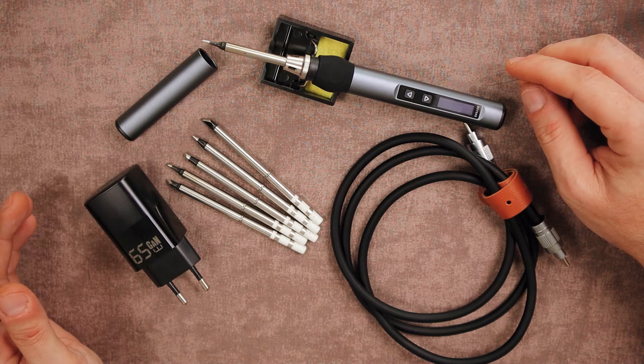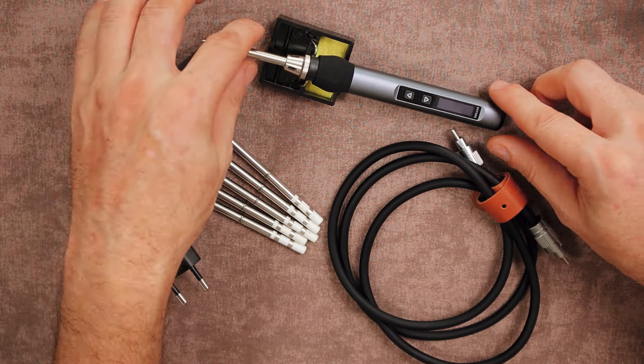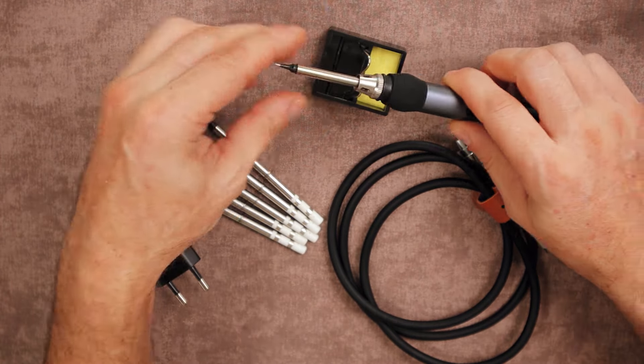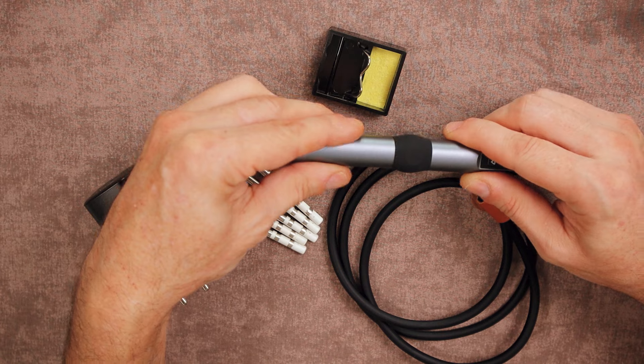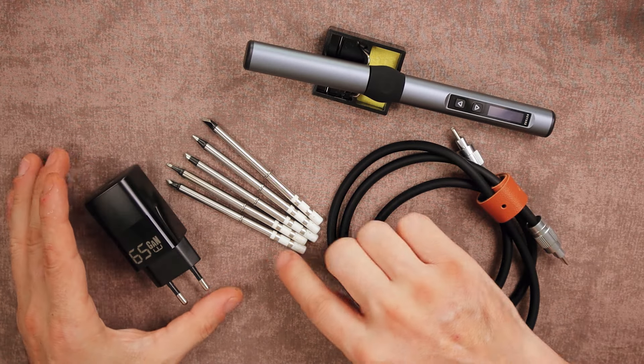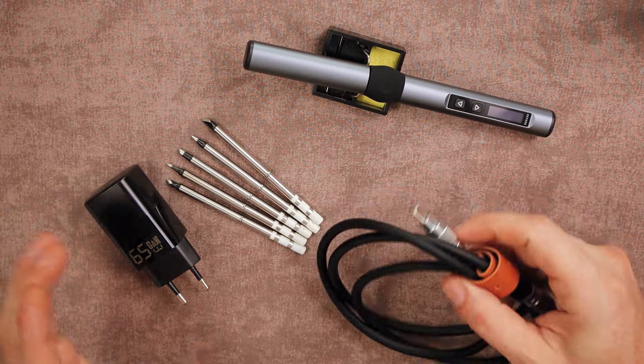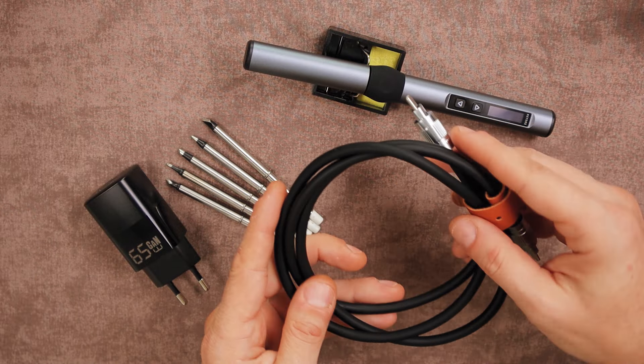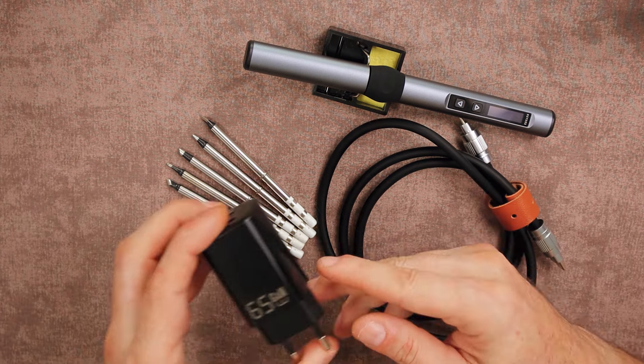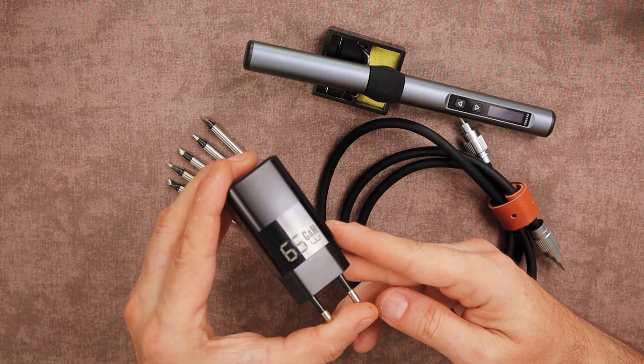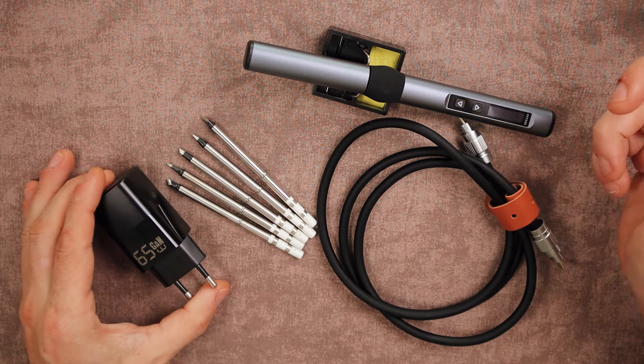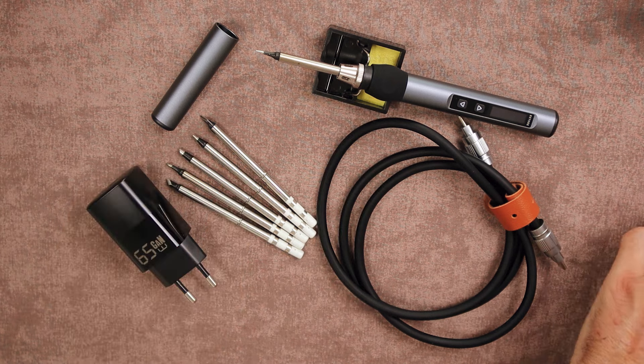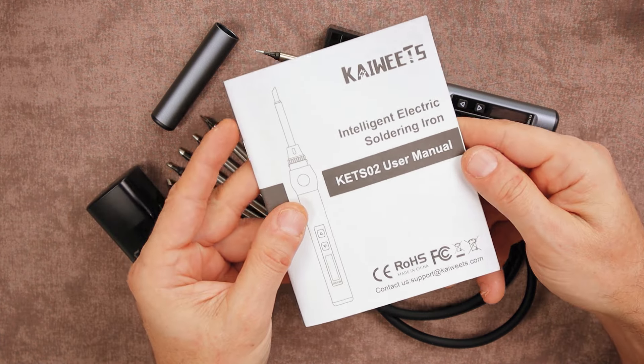Okay, so here we have the entire package one more time. We have the soldering iron, the holder with the sponge, and of course the nice cover for the soldering iron. We have the extra tips that you can order, a very well-made USB-C to USB-C cable to power it on, and of course a powerful 65-watt charger. Excellent package. I would really recommend this one, and of course don't forget the user's manual because it's very important.